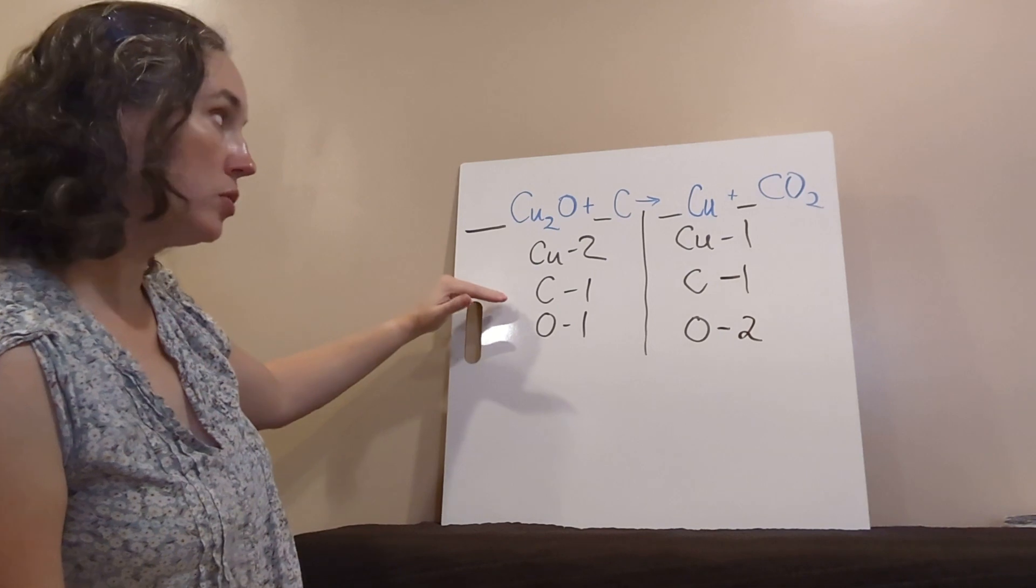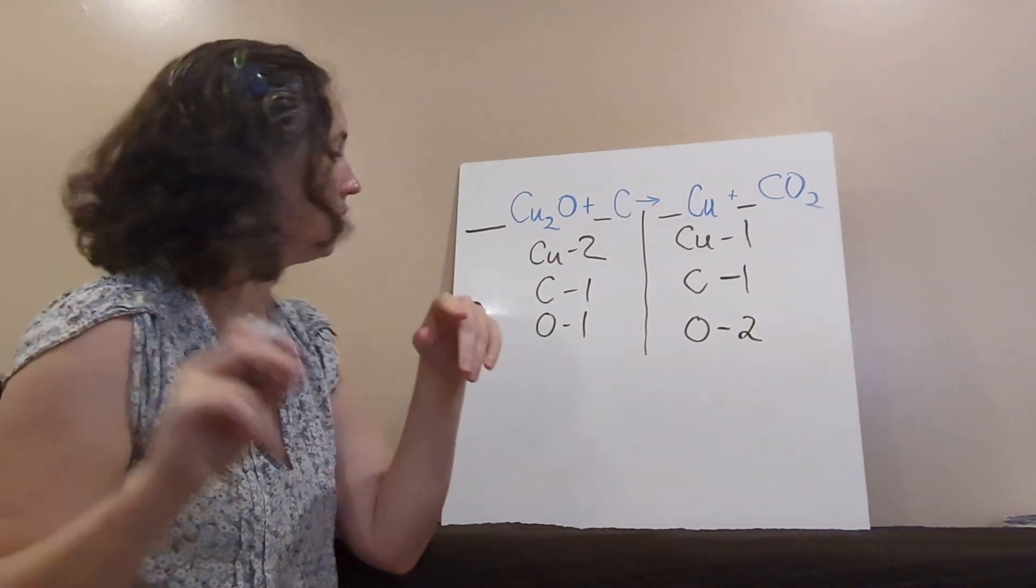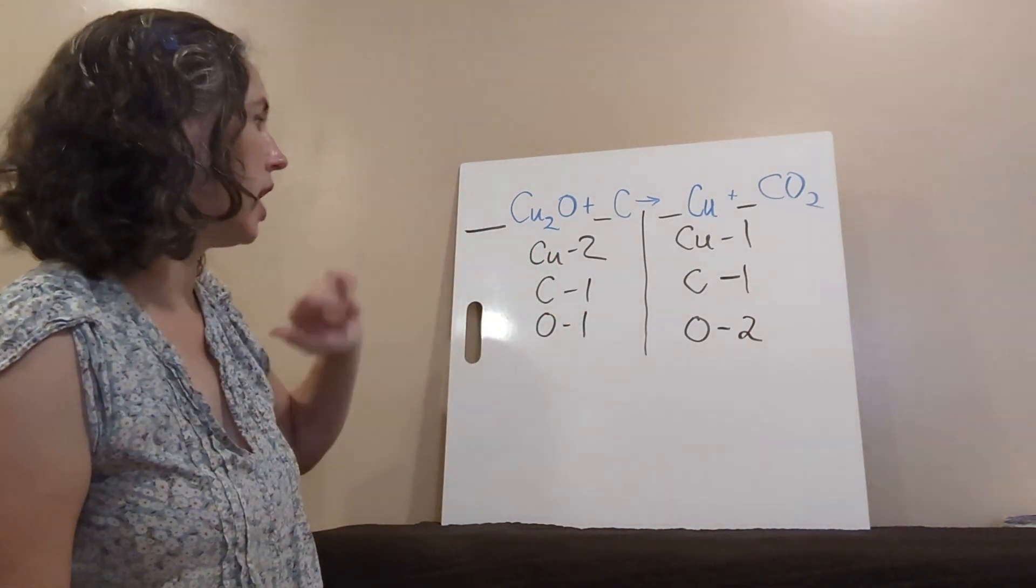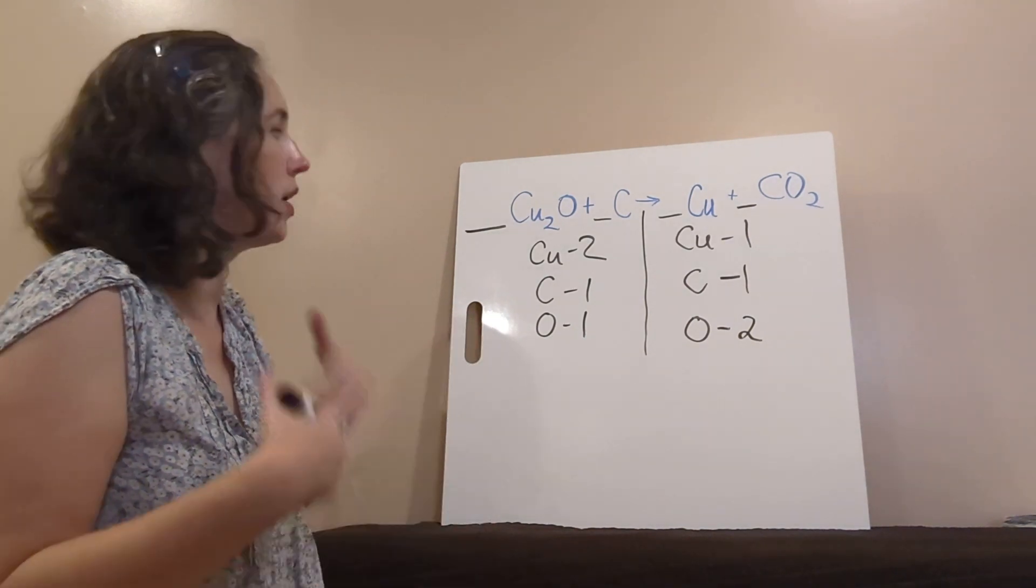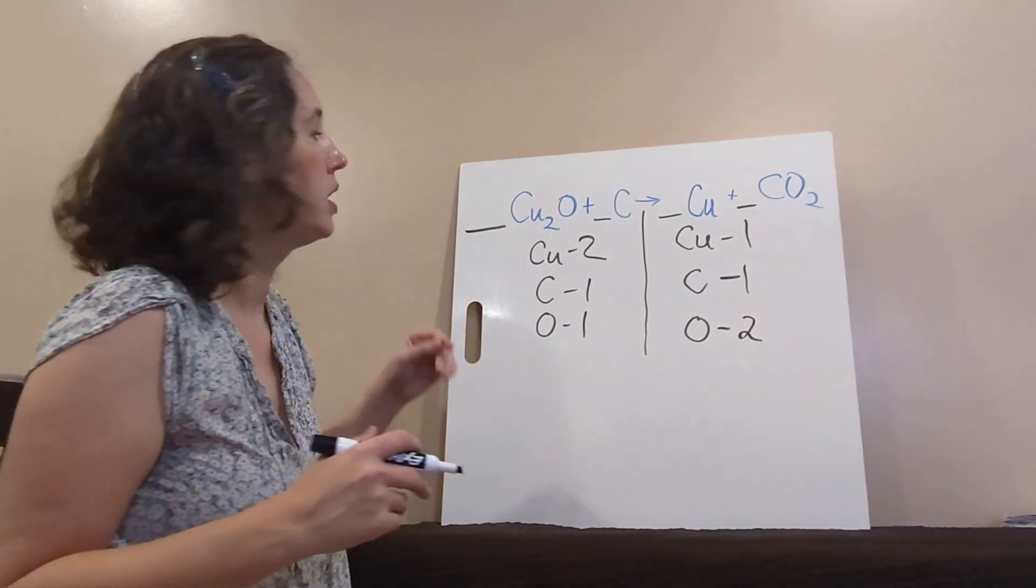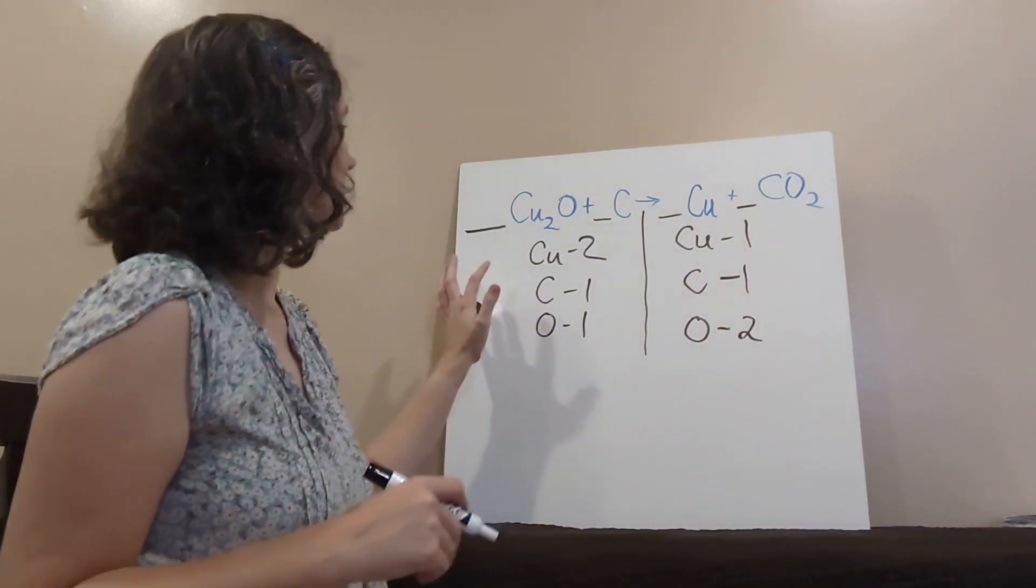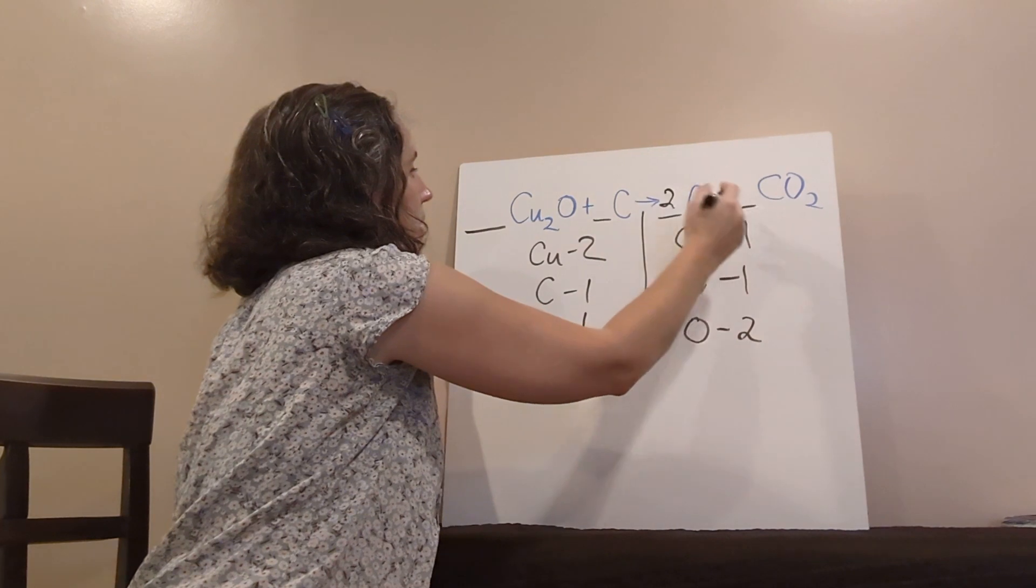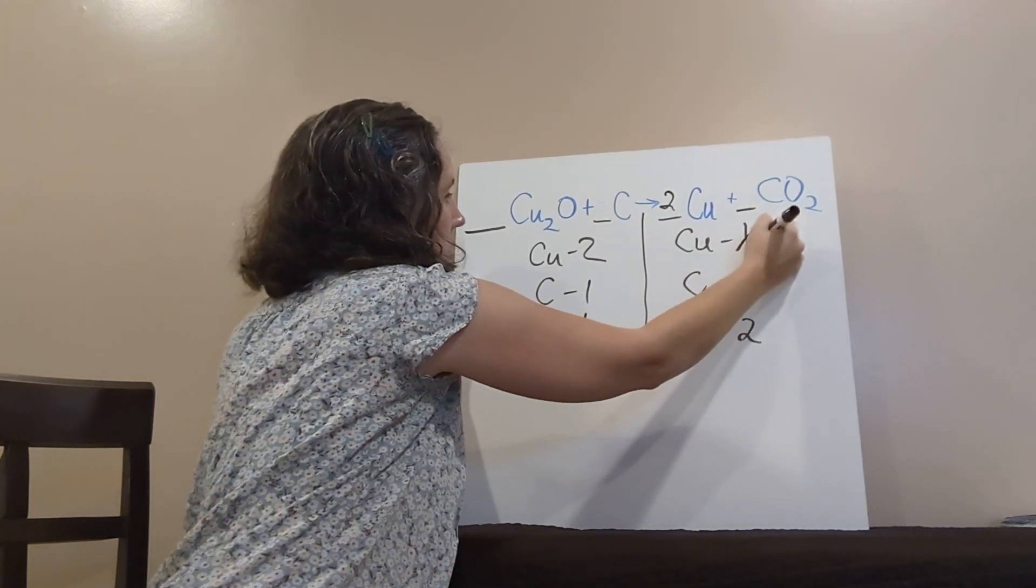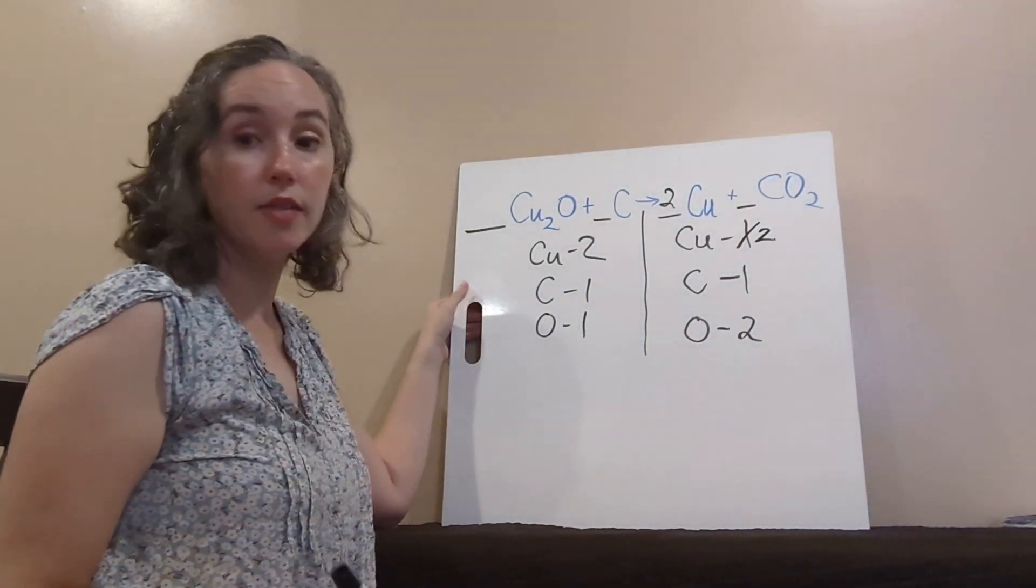So, my carbons are balanced, I'm all good there. But it's my oxygens and coppers that are off. So, I could start with either one. I'm just going to start with copper. So, I've got two coppers here and one here. I'm going to put a two right there and cross that off and make it two.